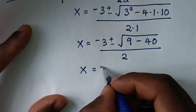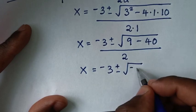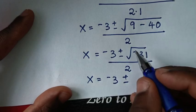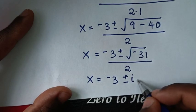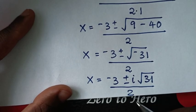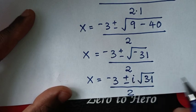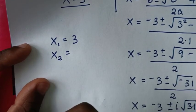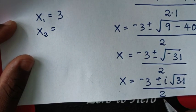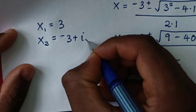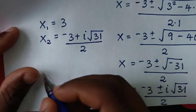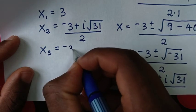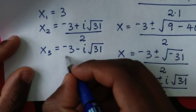This gives x = (-3 ± √(9 - 40)) / 2 = (-3 ± √(-31)) / 2. Since we have a negative under the square root, this becomes (-3 ± i√31) / 2, giving two complex solutions. The second value is x = (-3 + i√31) / 2, and the third value is x = (-3 - i√31) / 2.